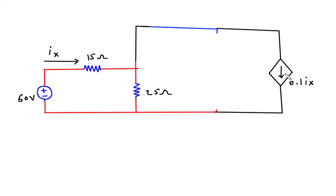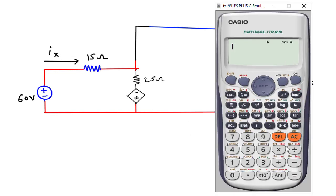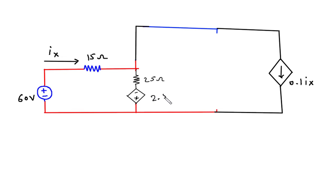Now again we will convert this dependent current source into its equivalent voltage source. So it will be in series with this 25 Ohm. This is 25 Ohm. This will be positive and this will be negative. V is equal to I into R. So 0.1 into 25, which is 2.5Ix.